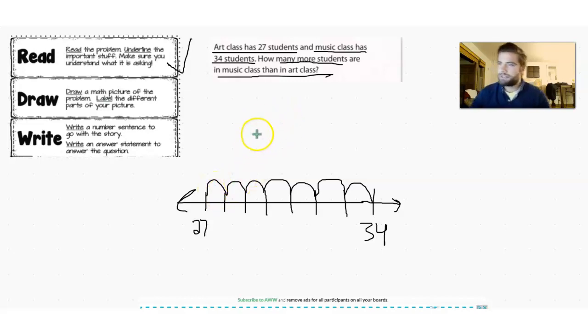So that tells us that we jumped seven times. We jumped seven times and that tells us we have seven more students in music class than an art class. So we drew our picture.